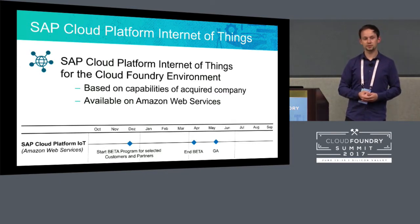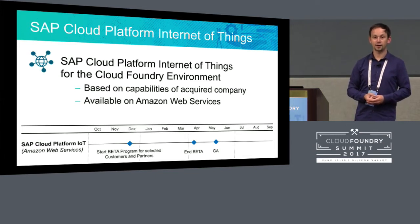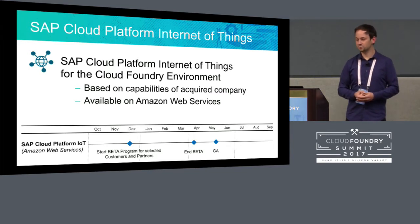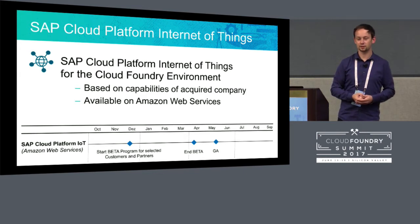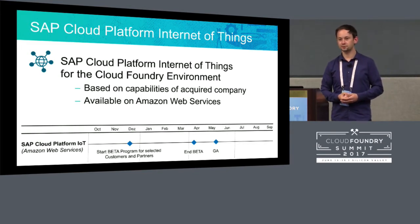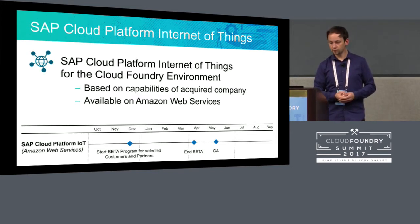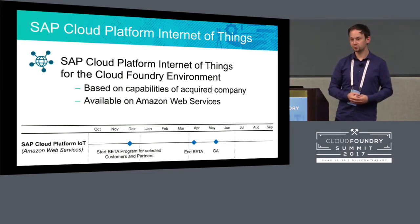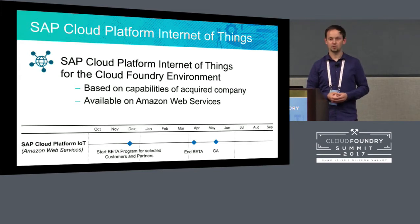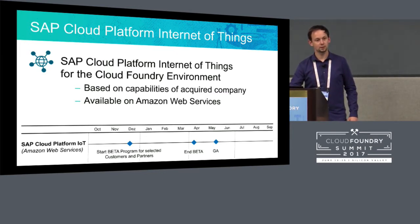We started with a beta program because it's really important to listen to customers — what are the needs in terms of how to collect, connect, and what kind of data. One example, we even have them in the audience, was with Mitsubishi where we presented a demo at the Hannover Fair — collecting data from a robot and visualizing it. After gathering all this feedback, we put it into development and offered the service. Since May this year, we run first on Amazon Web Services as our first cloud provider. We're intending to build on top of SAP Cloud Platform, using a multi-cloud approach.